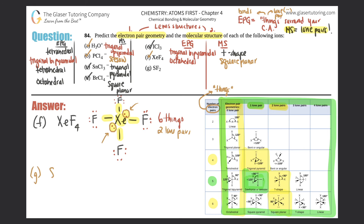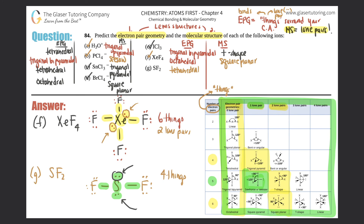Part (g): SF2. Sulfur is in the middle surrounded by two fluorines with single bonds, two lone pairs on sulfur, and three lone pairs around each fluorine. Sulfur has two bonds and two lone pairs — four total things — so the electron pair geometry is tetrahedral. With two lone pairs, the molecular structure is bent.